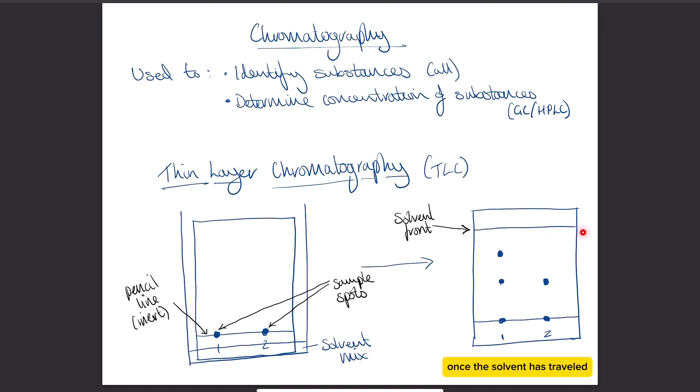Once the solvent has traveled at least three quarters of the way up the plate, you then take it out and draw a line to where the solvent got to. You don't let the solvent go all the way to the top, you just let it go at least three quarters, take it out, and draw a line to where the solvent got to.